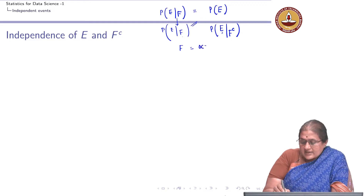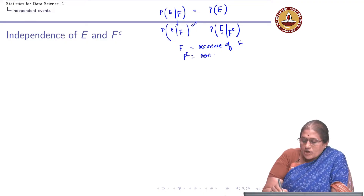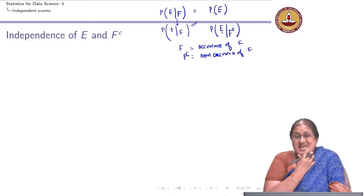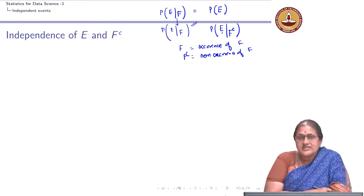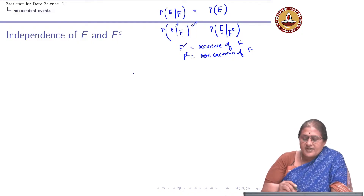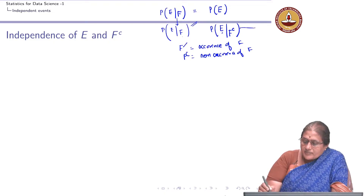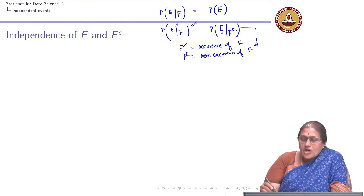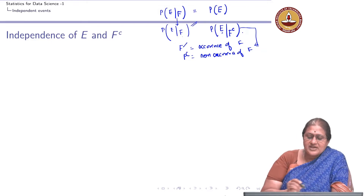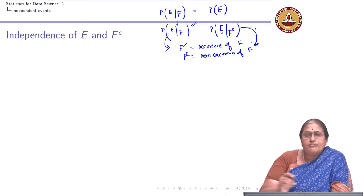Recall: F is the occurrence of event F, and F complement is the non-occurrence of event F. So the question we are asking is: if event E is conditioned on the non-occurrence of event F — that is, E conditioned on F complement — and if E and F are independent, can I say that E and F complement are also independent? That is the question.